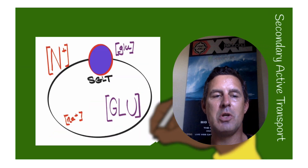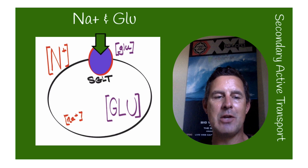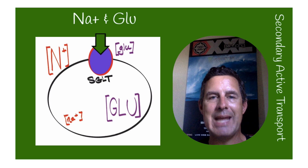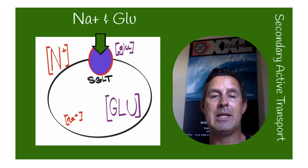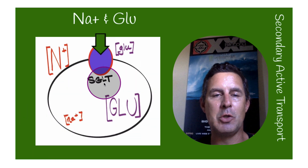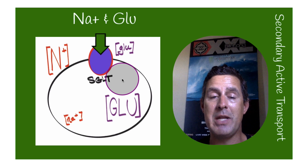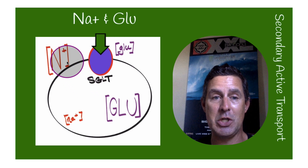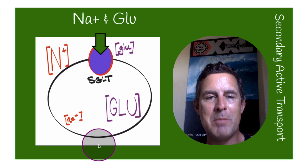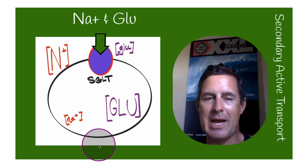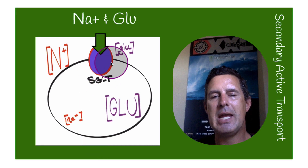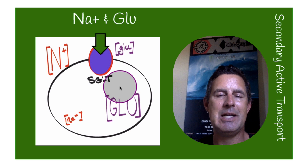Secondary active transport utilizes kinetic energy. Kinetic energy is created by any ion or molecule moving down its chemical gradient. In this example, we're looking at the sodium-glucose transporter, which is just one of many forms of secondary active transport. It is utilizing the kinetic energy created by sodium moving into the cell. Anytime something is moving down its gradient, it creates kinetic energy.